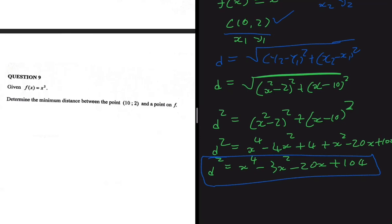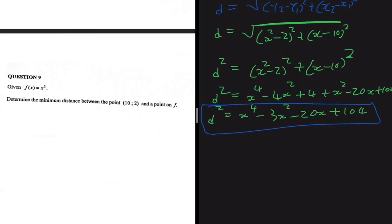We don't just want the equation for d² — we want the minimum distance between a point on the function and the point (10, 2). To do this, we differentiate d² and equate it to zero. That value of x will be the x-coordinate of the point giving the minimum distance. Differentiating: d(d²)/dx = 4x³ - 6x - 20 = 0.